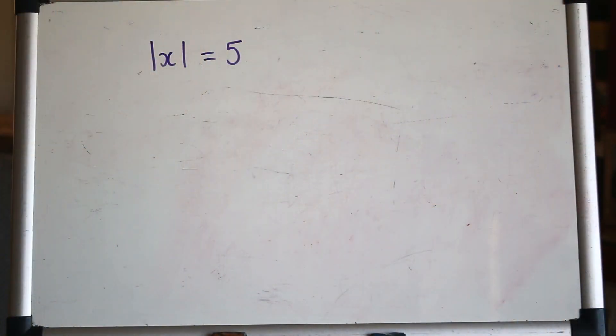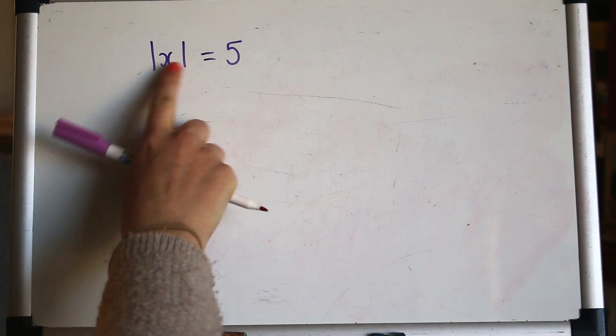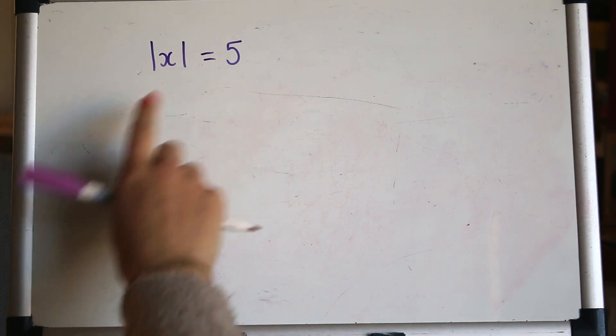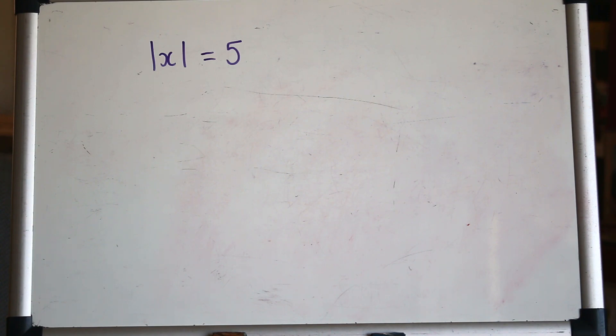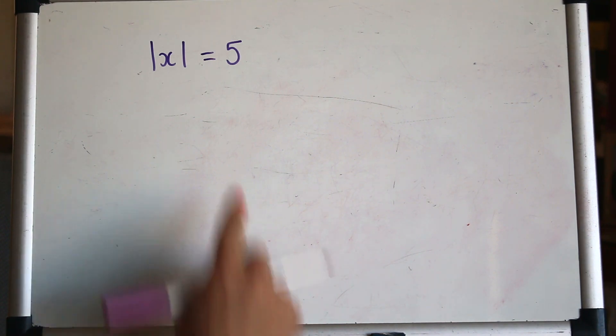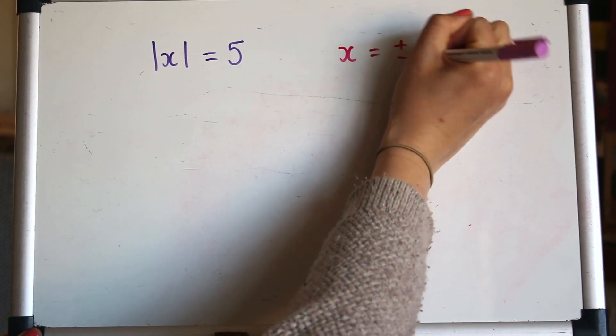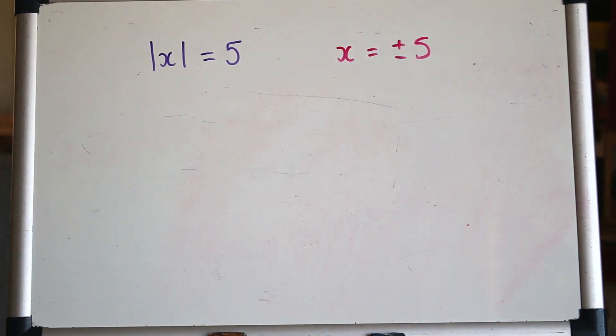For the modulus we use these two vertical lines here and what that means is modulus of x is 5. Modulus means the size of the value so it doesn't care about whether it's positive or negative, so in reality this x could be positive or negative 5.